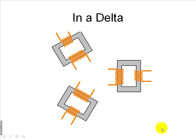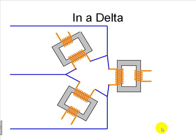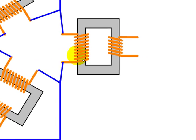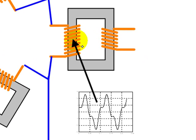Now we connect the primaries of the three transformers in a delta and connect that delta to the sources. Every line voltage is sinusoidal because it is imposed that way by the sources. Because the voltage in each coil is sinusoidal, the magnetization current in that coil must have a non-sinusoidal shape — it has to have a fundamental component I-fundamental of phase A, and also a triple frequency component of current.